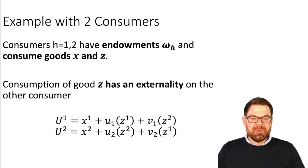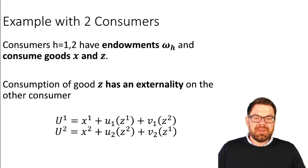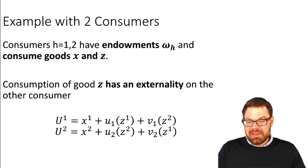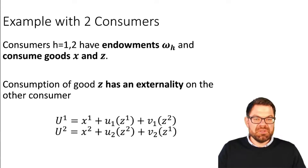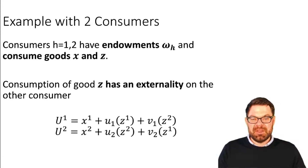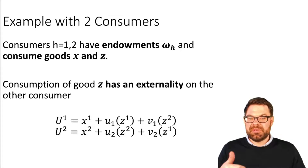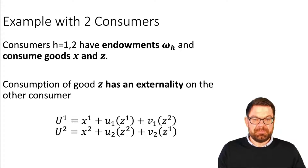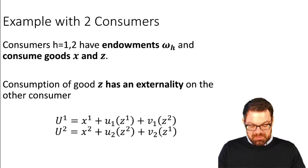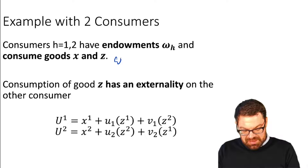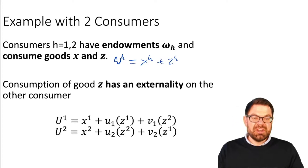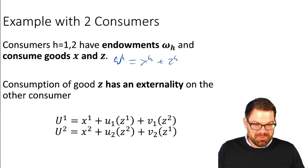We now look at this more formally with a simple example. We have an economy with two consumers, one and two. Each has an endowment omega and can consume two types of goods: good x, which is a private good with no externality, and good z, which has an externality on the other consumer. Each person's budget constraint is simply: endowment equals x_h plus z_h, meaning prices are both one.